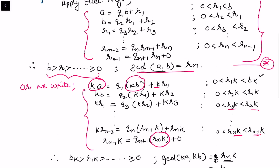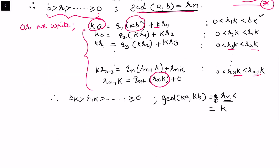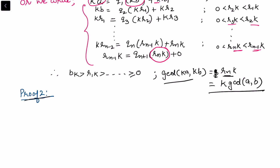This is equal to r_n·k, which is the same as k times r_n. We already know that r_n is gcd(a, b), and that proves our result — the consequence of the Euclidean algorithm.